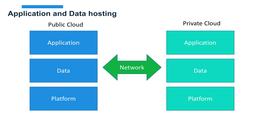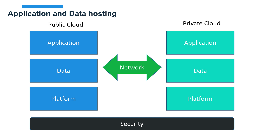The public cloud hosts the application, data, and platform — the operating system, the compute instance, the virtual machine — and private clouds do exactly the same thing. Even though you own the hardware and software in your data center, the functions they perform are systemic to what both public and private clouds are. Security must rise above both platforms; it's not a cloud-native or private-cloud-native feature — it needs to be systemic to how we manage, control, and operate both platforms.